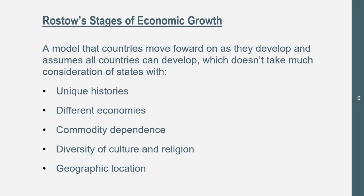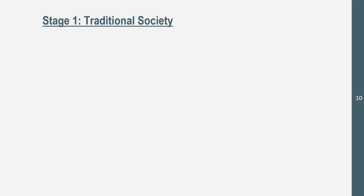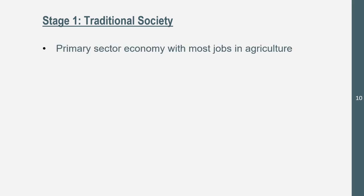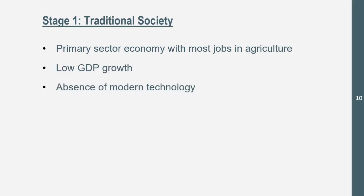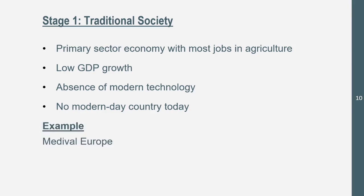Countries move forward across five stages. Stage one is the Traditional Society. They have a primary sector economy with most jobs in agriculture, low GDP growth, and an absence of modern technology. There is no modern-day country today that is in the traditional society stage — every country is at stage two and above. Examples include medieval Europe and colonial America.